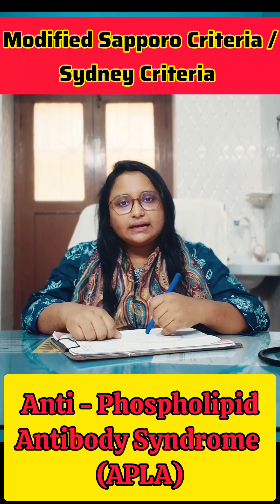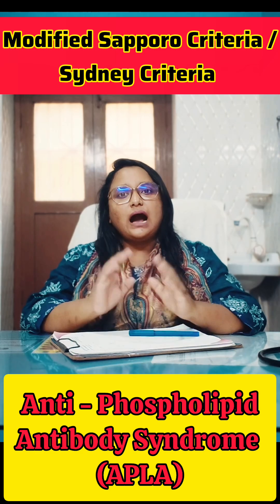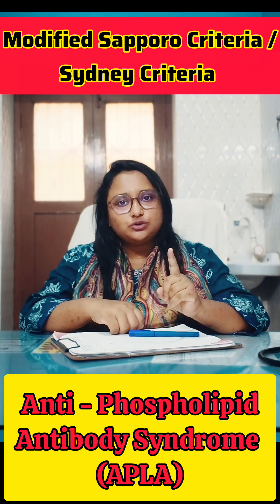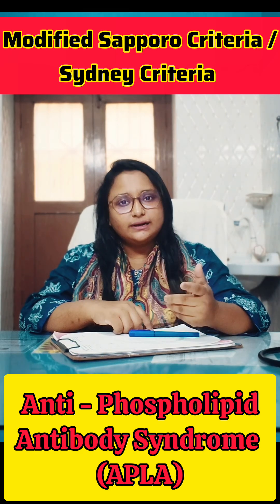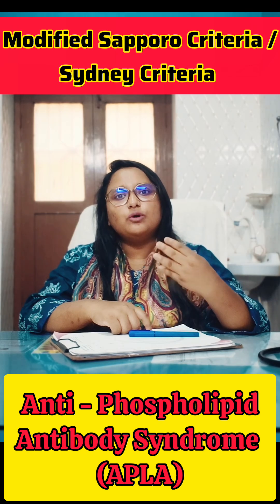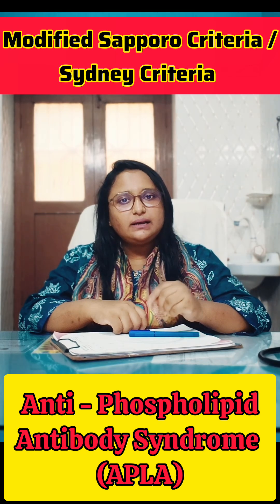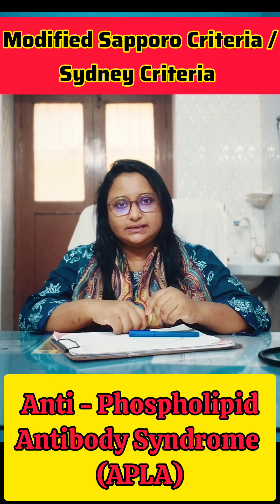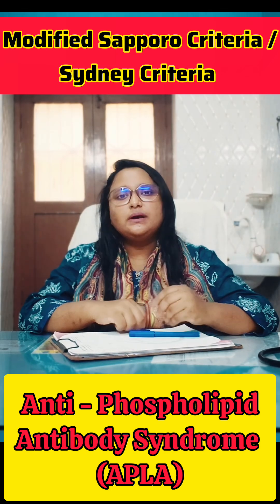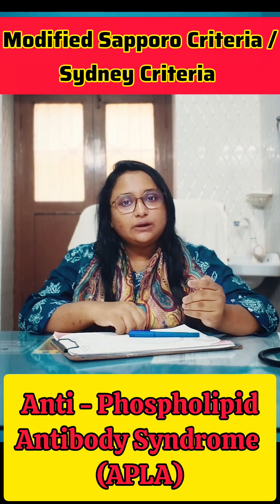In clinical criteria, there are four things that can be defined, and any one should be present. First, if there are three or more pregnancy losses happening at less than 10 weeks of pregnancy. Second, if there is even one pregnancy loss at more than 10 weeks.